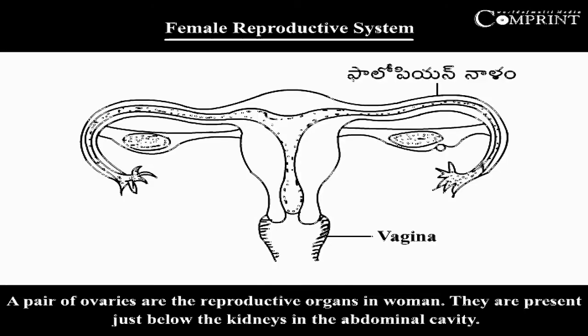Female Reproductive System. A pair of ovaries are the reproductive organs in women. They are present just below the kidneys in the abdominal cavity.